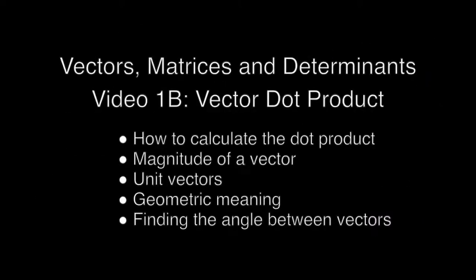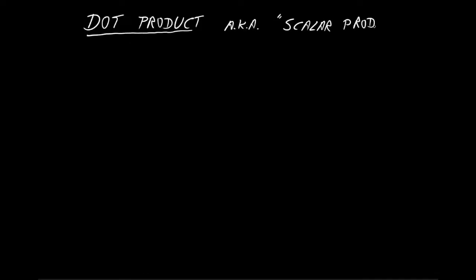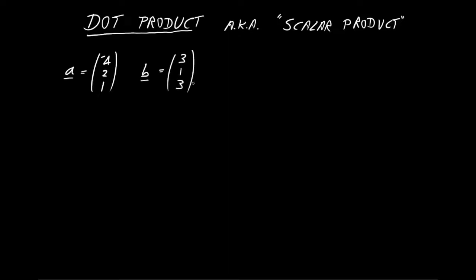Welcome to the second video. We're going to look at the vector dot product, also called the scalar product. We'll look at the magnitude of a vector, the meaning of unit vectors, the geometric meaning of the dot product, and finding the angle between vectors using the dot product. The dot product is a way of combining two vectors to produce a number — a simple scalar, hence the alternate name scalar product.